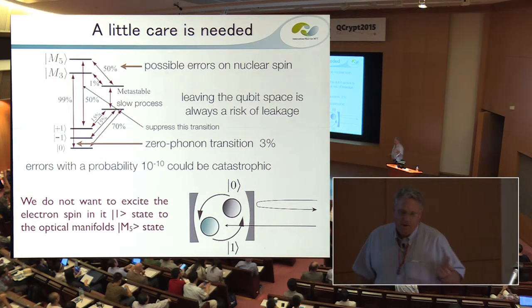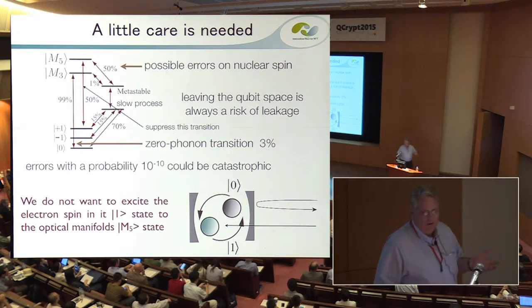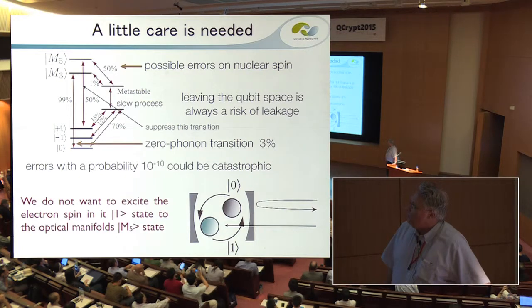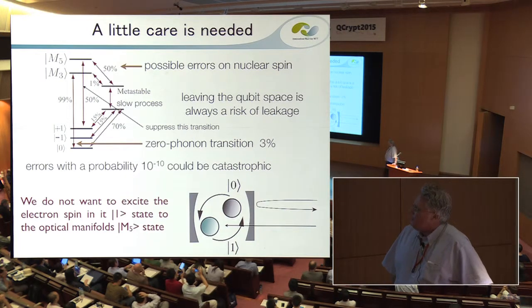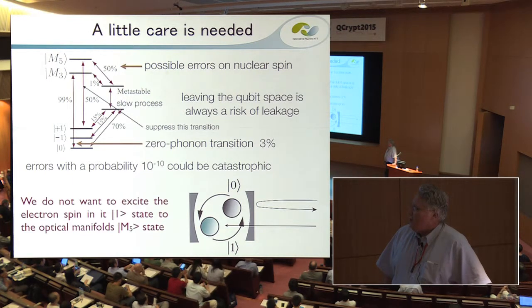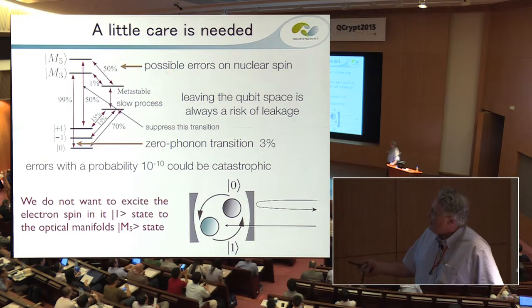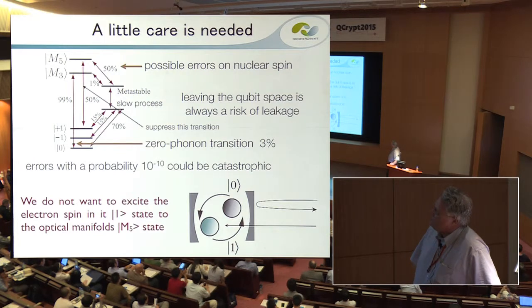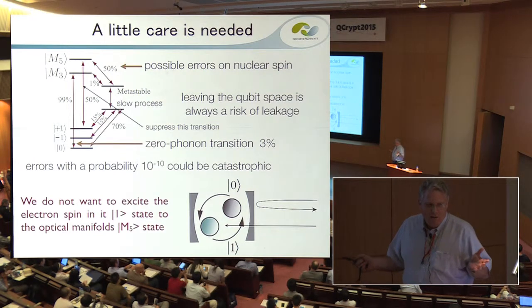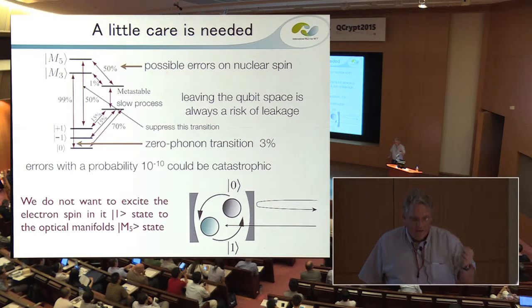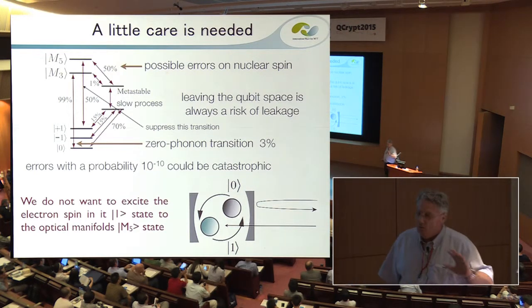With diamond, we don't want to use the diamonds as emitters — which is how diamond is typically used, emitting a single photon. We want to use what some people call dipole-induced transparency. Basically, we reflect a photon off a cavity and have the state of the electron spin determine what happens to the photon. From a computational perspective, this allows us to theoretically build a fault-tolerant system where all the error rates are appropriate.